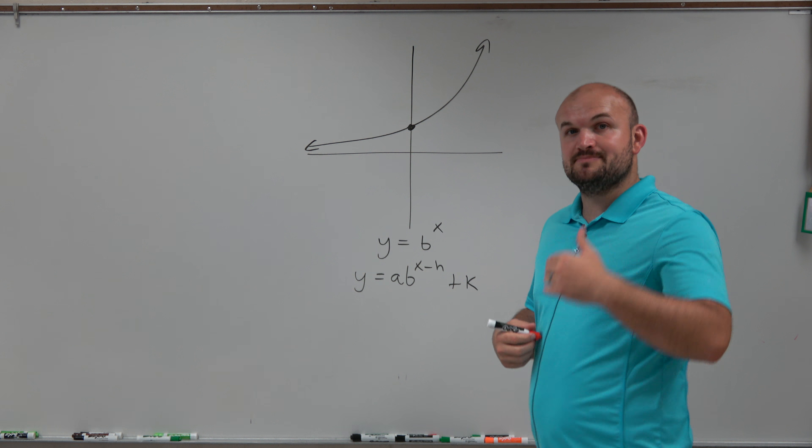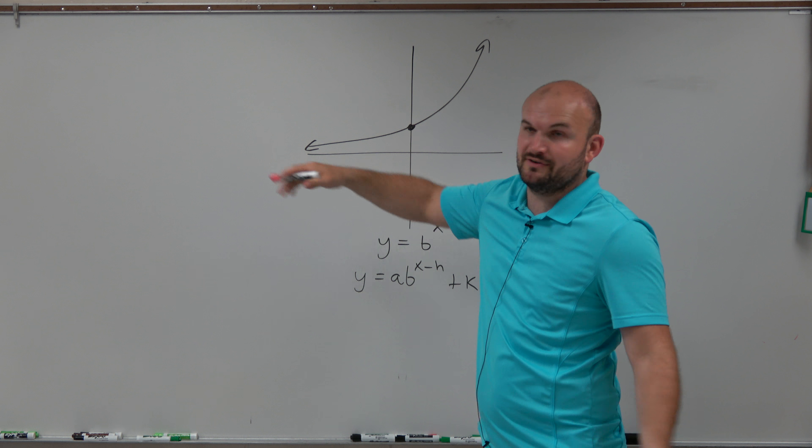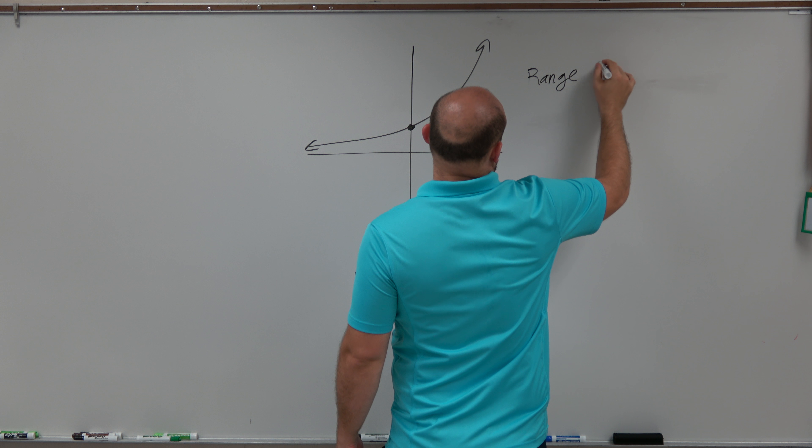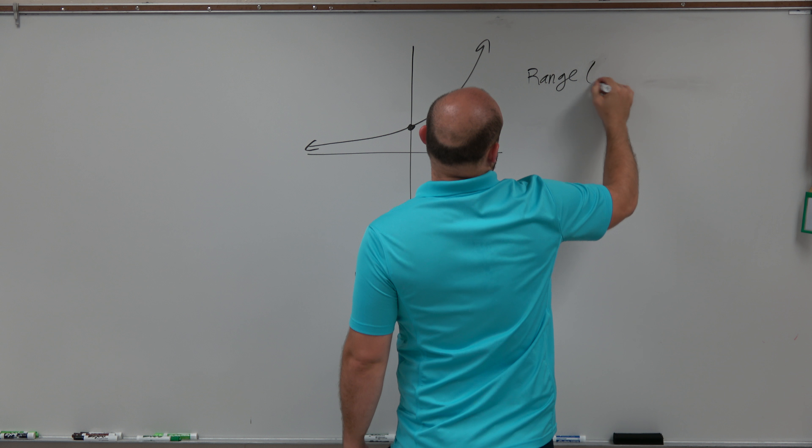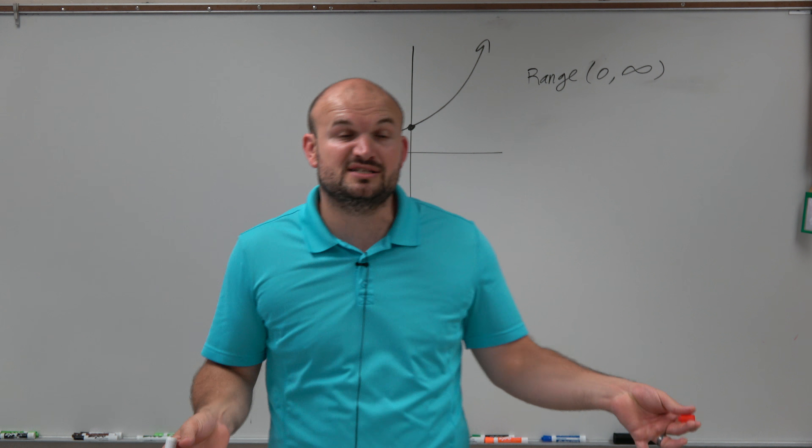So the range is basically how low the graph goes to how high it goes. Since it's getting closer and closer to zero but never goes there, we're going to say that the range of this graph is from zero to infinity. We're going to use parentheses because zero is not included since it actually doesn't get to zero.